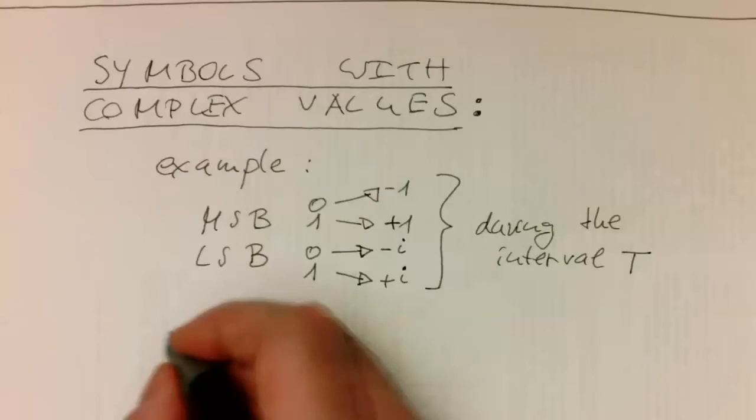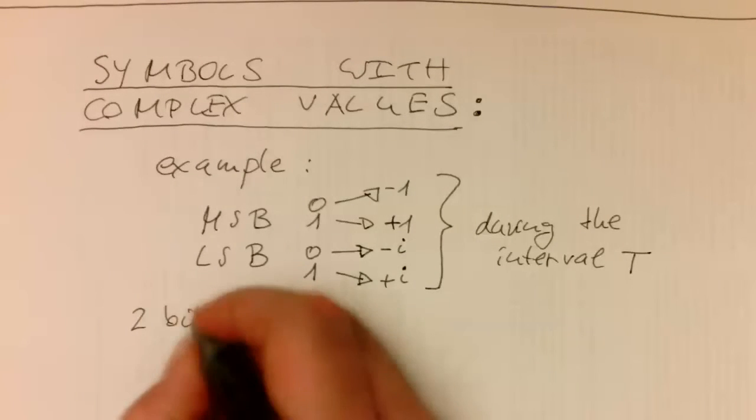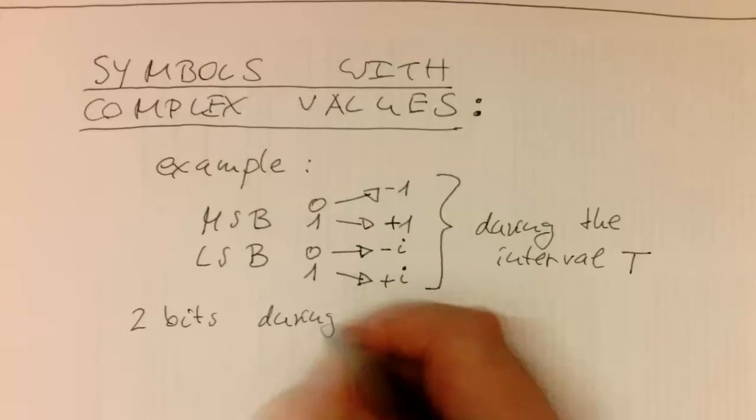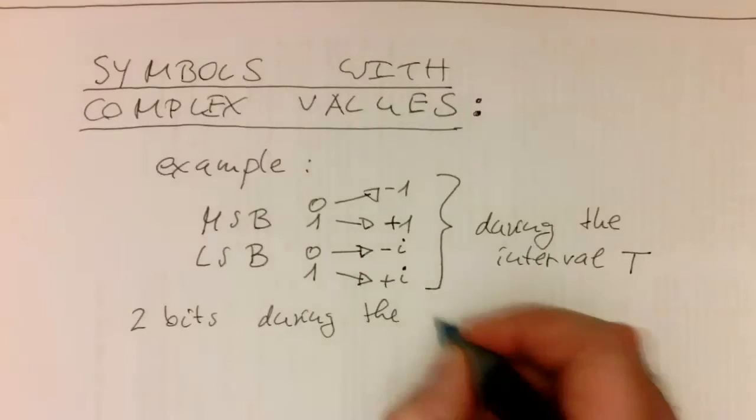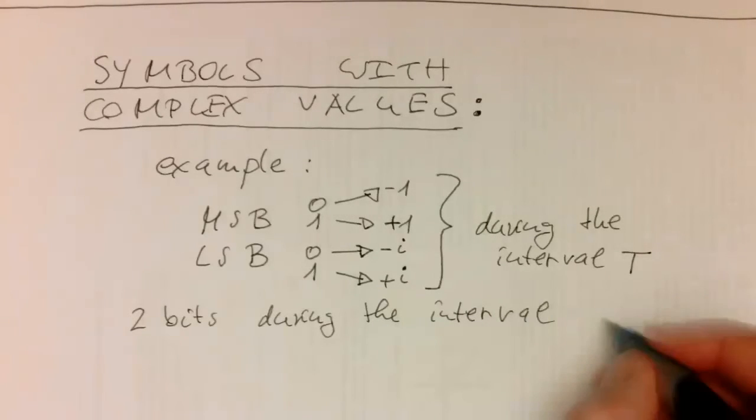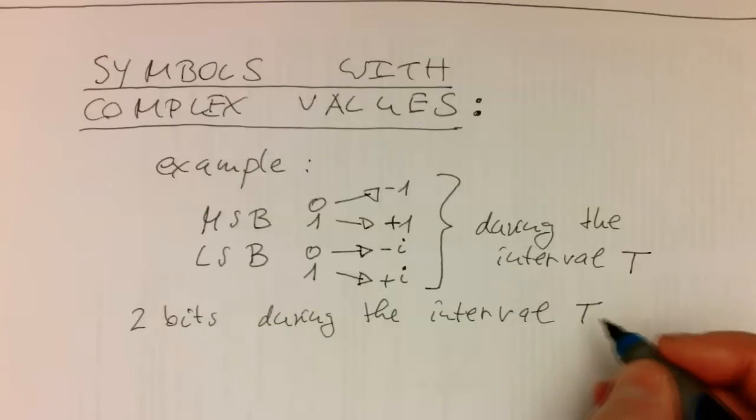We can transmit two bits during the interval T. So then our symbol becomes complex.